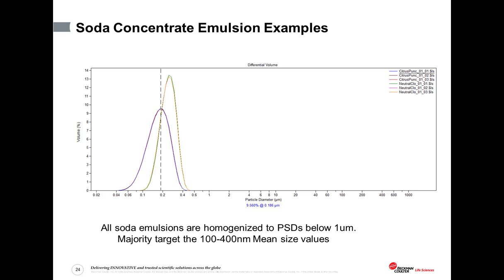Here are two examples of flavored oil emulsions — triplicate runs of both. One particular emulsion has a mean size of about 200 nanometers, whereas the other is a little larger at about 300 nanometers. Pass-fail criteria are related to the modal values or D10, D50, and D90 values, which represent the breadth of the emulsion sizes — all dependent on what the customer considers appropriate sizing for their product.